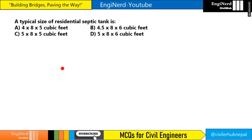Hello everyone, welcome to Engineered. Here is a question: the typical size of a residential septic tank is — Option A: 4×8×5 cubic feet, Option B: 4.5×8×6 cubic feet, Option C: 5×8×5 cubic feet, and Option D: 5×8×6 cubic feet.